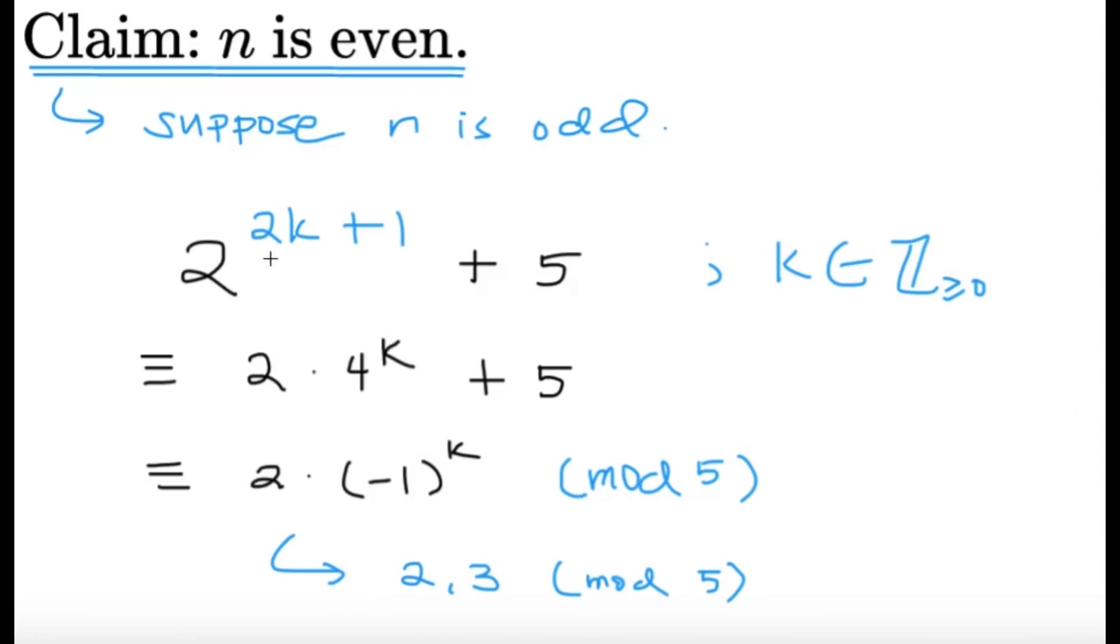Alright, so 2 raised to n plus 5. I'm just going to replace n by 2k plus 1, and that's going to be for non-negative integers k. So 2 raised to 2k plus 1 plus 5. The 2 raised to 2k plus 1, I'm going to write it as 2 times 2 raised to k. By properties of exponents, that's going to be equal to 2 times 4 raised to k. Now, I'm going to do stuff under mod 5. If I take mod 5, so 2 times 4 raised to k plus 5 mod 5. Well, this 5 just goes away, and then this 4 becomes a negative 1. So it's technically 2 times negative 1 raised to k under mod 5, which is technically either 2 or negative 2 depending on the value of k. So we can say that it's either 2 or 3 under mod 5.